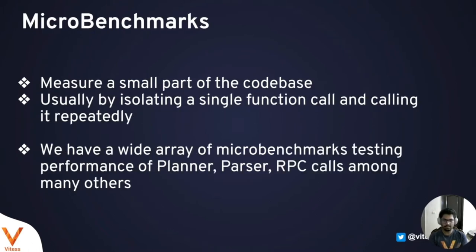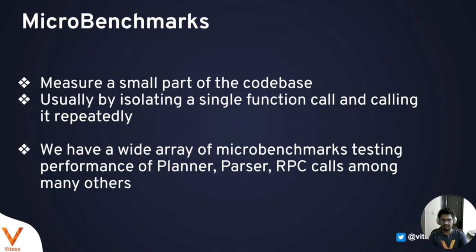Micro benchmarks, like the name suggests, measure a small part of the code base. This is done by isolating a single function call and running it repeatedly — for example, running a benchmark for two seconds and counting how many times the function executes. We have a wide array of micro benchmarks in Vitesse testing the planner, the parser, RPC calls, and others. You can find benchmark tests within the Go testing files of the Vitesse code base.